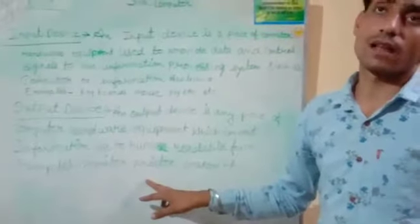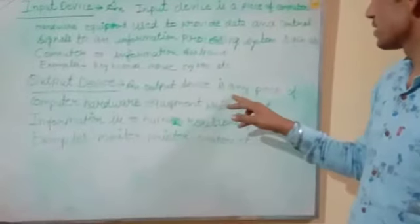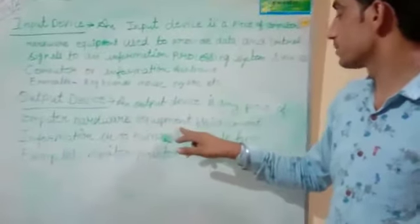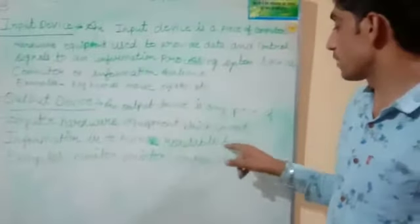An output device is a piece of computer hardware which converts information into human readable form.